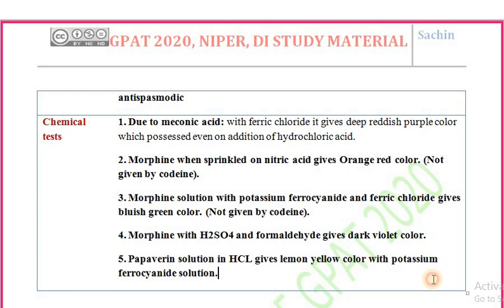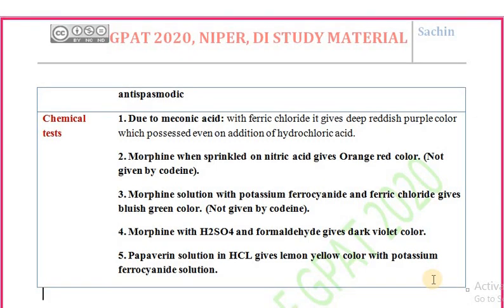Papaverine solution in hydrochloric acid gives a lemon yellow color with potassium ferrocyanide solution. These are the chemical tests for opium alkaloids.